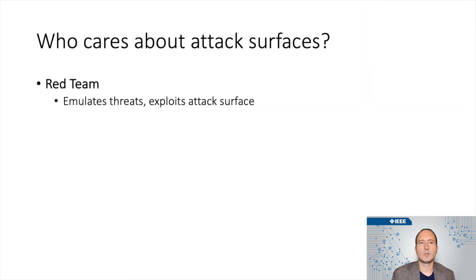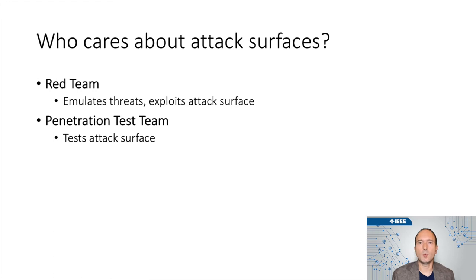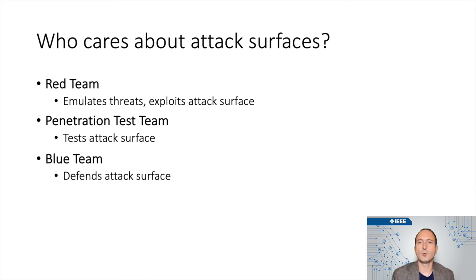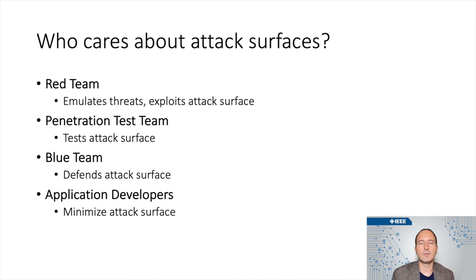So who cares about attack surfaces? Let's talk about red teams. The job of a red team is to emulate a threat and test the processes and protection mechanisms in an organization to see what they do if a real APT or another real adversary came up against them, and they exploit the attack surface to do that. The pen test team is more of a vulnerability hunting team — they want to explore the entire attack surface and see if there are any vulnerabilities they can find. The blue team's job is to detect and prevent attacks on that surface. And last but not least, application developers need to be aware of the attack surface so they can minimize it — presenting as small and simple an attack surface as possible while still providing the services you want to provide to your customer.